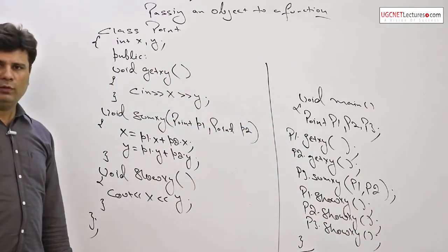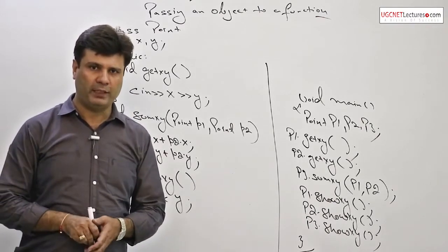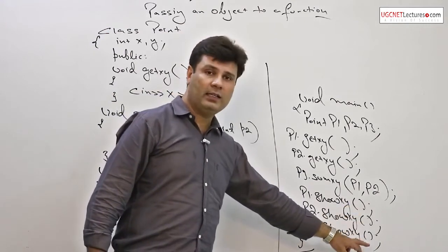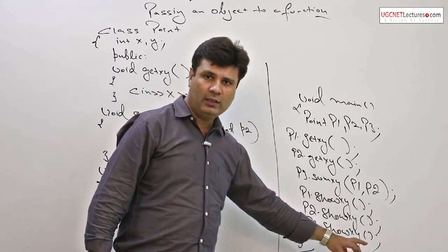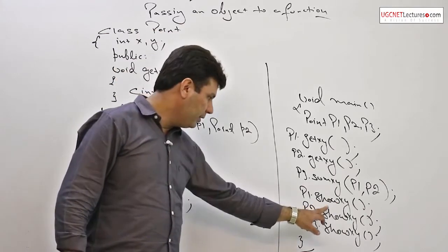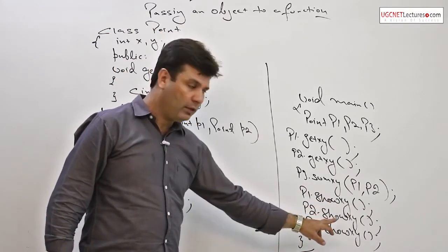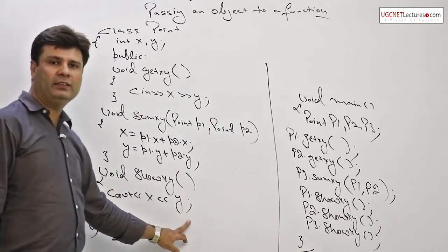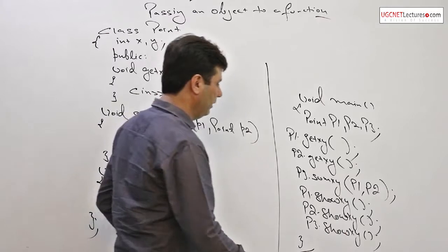In order to display all of these three values of object p1, p2 and p3, look at this. No object is required as an argument to be passed over here. I have called the function by object reference. So by which object: p1 dot show xy, p2 dot show xy, p3 dot show xy, you will have an output of all of these three objects over here.